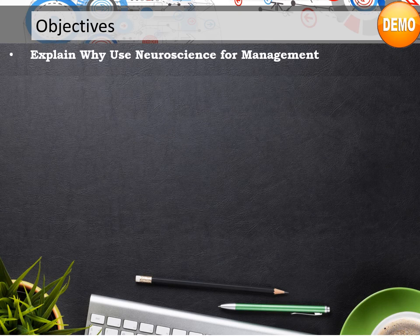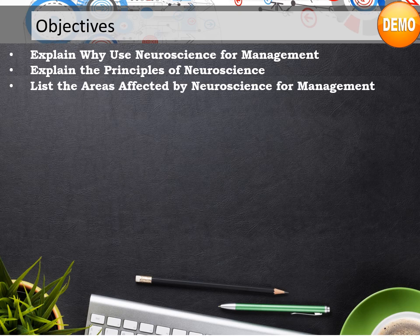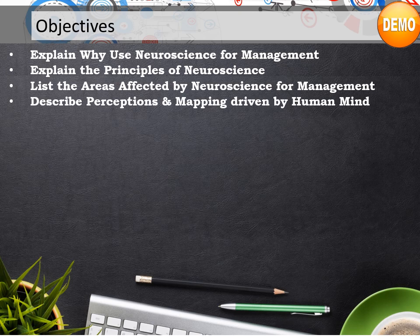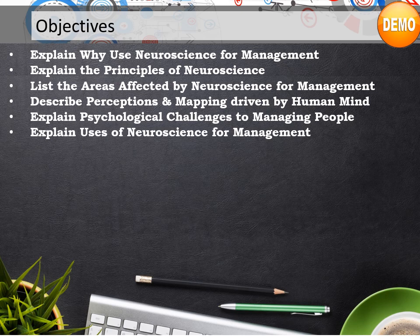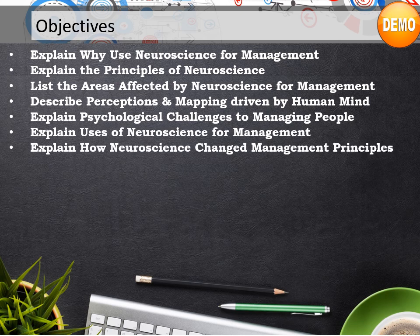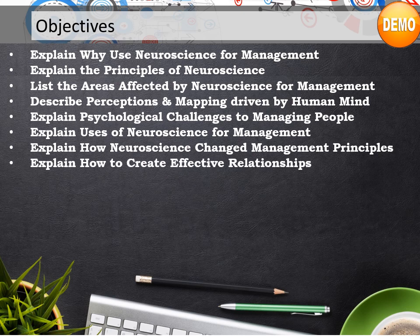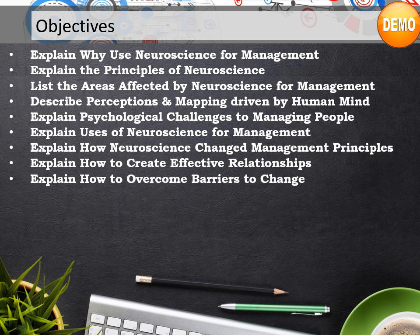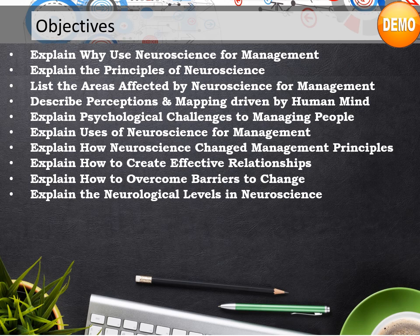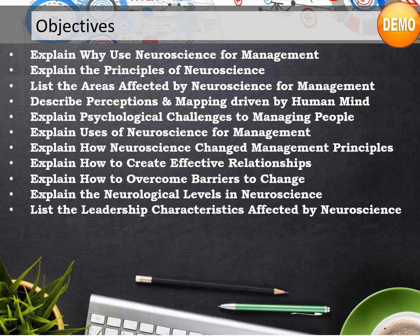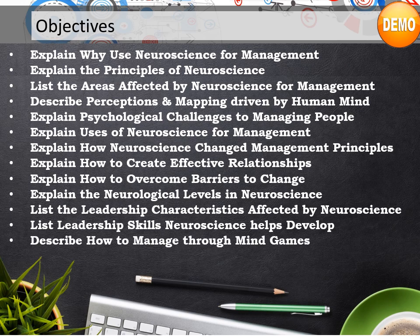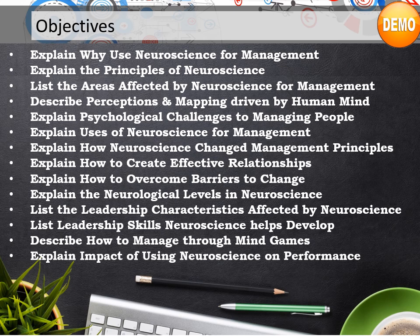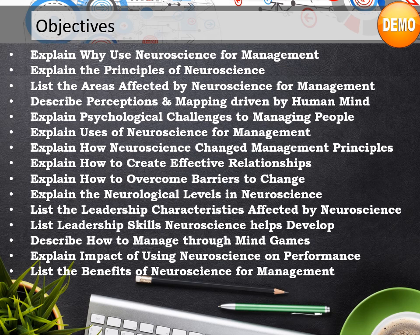Let's review the course objectives: explain why to use neuroscience for management; explain the principles of neuroscience; list the areas affected by neuroscience for management; describe perceptions and mapping driven by the human mind; explain psychological challenges to managing people; explain uses of neuroscience for management; explain how neuroscience changed management principles; explain how to create effective relationships; explain how to overcome barriers to change; explain the neurological levels in neuroscience; list the leadership characteristics affected by neuroscience; list leadership skills neuroscience helps develop; describe how to manage through mind games; explain the impact of using neuroscience on performance; list the benefits of neuroscience for management.